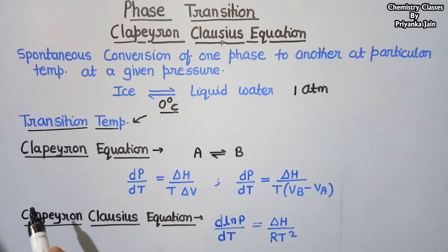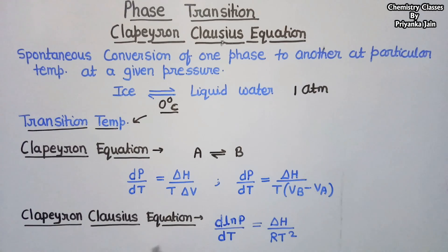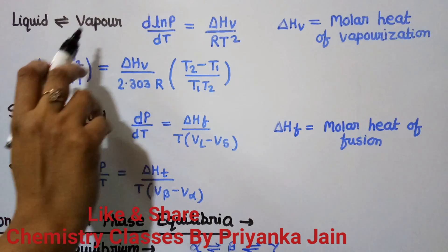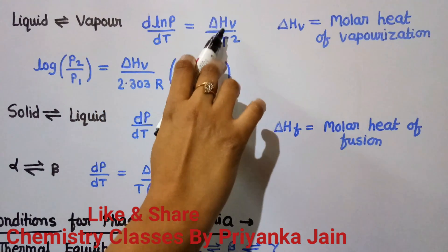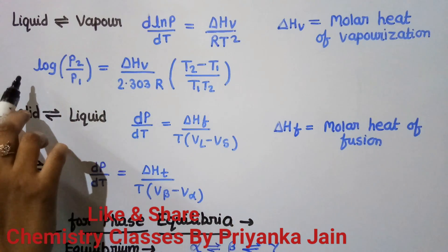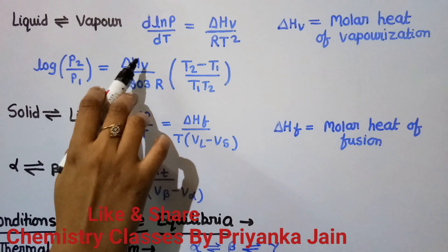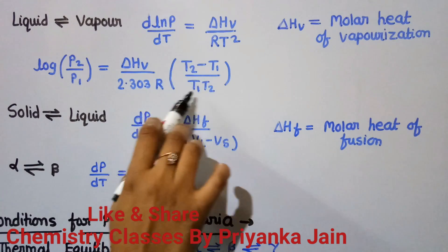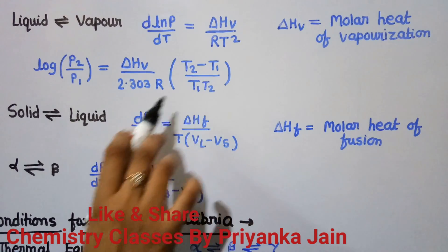This Clapeyron equation was further developed by Clausius, so it is now known as the Clapeyron-Clausius equation. According to this equation, d(lnP)/dT = ΔH / (RT²). For liquid-vapor equilibrium, the equation is d(lnP)/dT = ΔH_v / (RT²), where ΔH_v is the molar heat of vaporization. Another form of this equation is: log(P₂/P₁) = (ΔH_v / 2.303R) × (T₂ − T₁)/(T₁·T₂), or equivalently using (1/T₁ − 1/T₂).